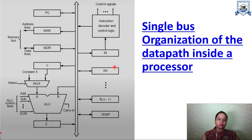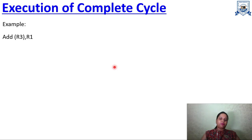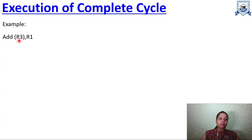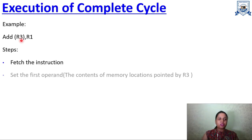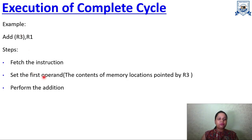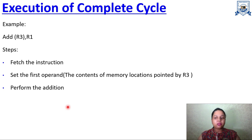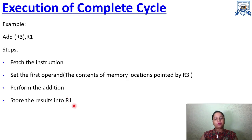Let's see one example: Add (R3), R1. The brackets around R3 are important — they indicate indirect addressing. R1 is holding a value directly, but R3 is storing an address, and at that address the actual value resides. So we have to travel to that address and read the value — this is indirect addressing. The steps are: fetch the instruction, get the first operand (reading the value at the address stored in R3), then perform the addition, and store the answer in R1.